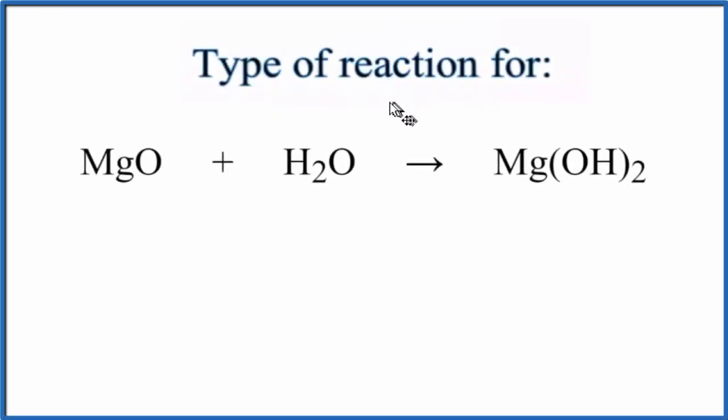In this video we'll look at the type of reaction for MgO plus H2O yields Mg(OH)2. Magnesium oxide plus water gives us magnesium hydroxide.